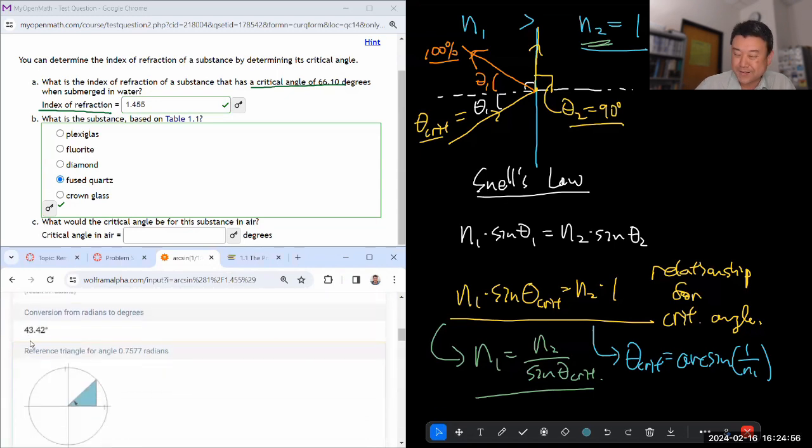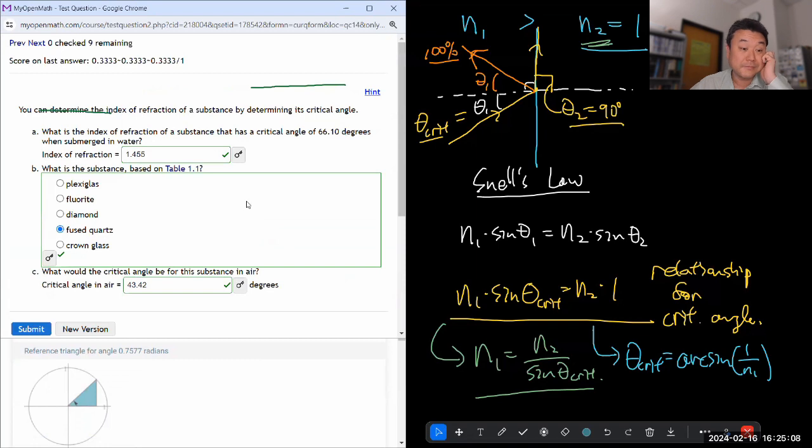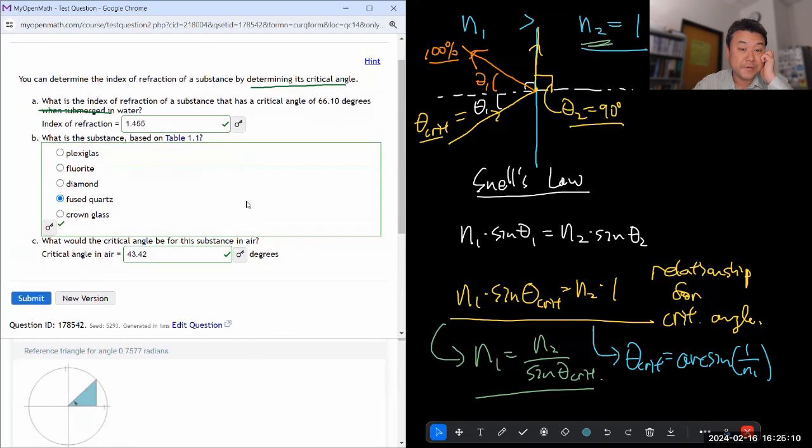Let's see, okay, give us an answer in degrees. So 43.42 degrees. 43.42 degrees. Yeah, it's a lot smaller than the angle in water. Yeah. Good. So that's that.